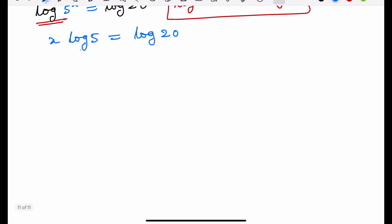Now, move log(5) to the right side, which gives x = log(20) / log(5).